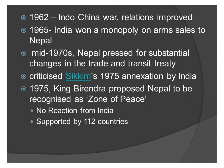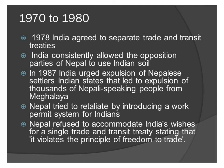Before 1978, India had a single trade and transit treaty with Nepal. However, Nepal did not want to link its transit rights to other trade and security concerns of India, so it wanted separate treaties. Due to the change of government, the Morarji Desai government in India decided to agree to the Nepalese demand and signed separate trade and transit treaties. India also consistently allowed the opposition party of Nepal to use Indian soil, which was another sore point in India-Nepal relations.